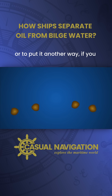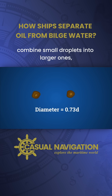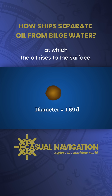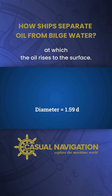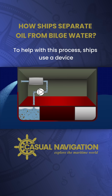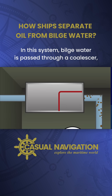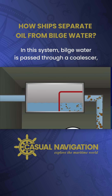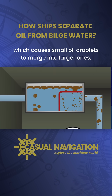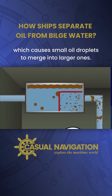To put it another way, if you combine small droplets into larger ones, it greatly increases the speed at which the oil rises to the surface. To help with this process, ships use a device called an oily water separator. In this system, bilge water is passed through a coalescer, which causes small oil droplets to merge into larger ones.